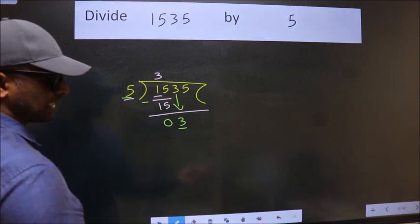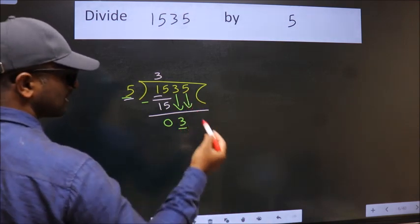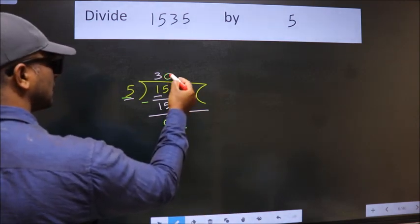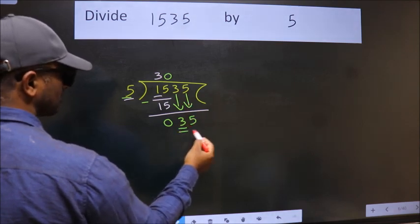So we should bring down the second number. And the rule to bring down the second number is put 0 here. Then only we can bring this number down. So 35.